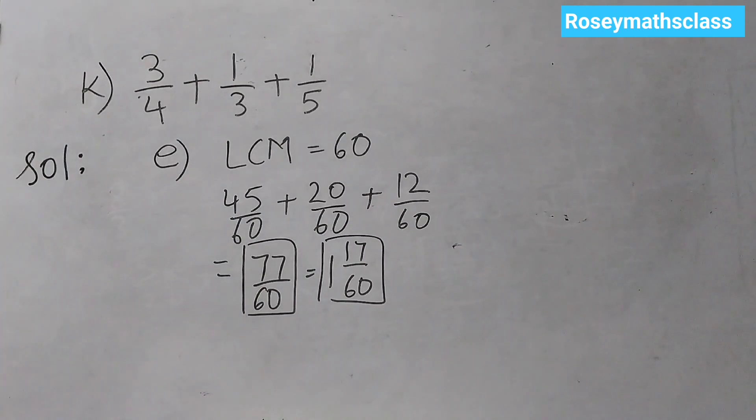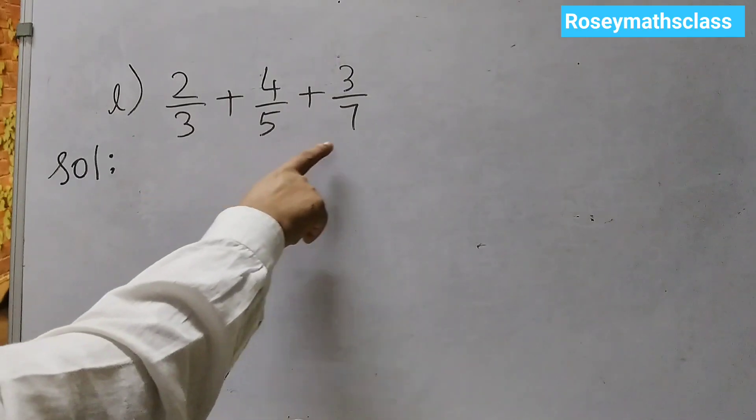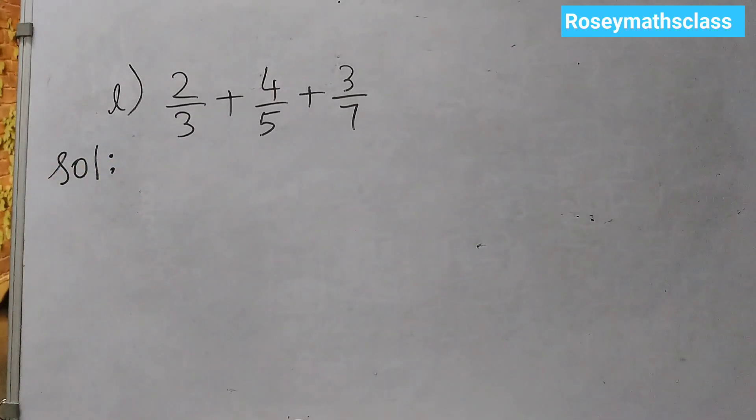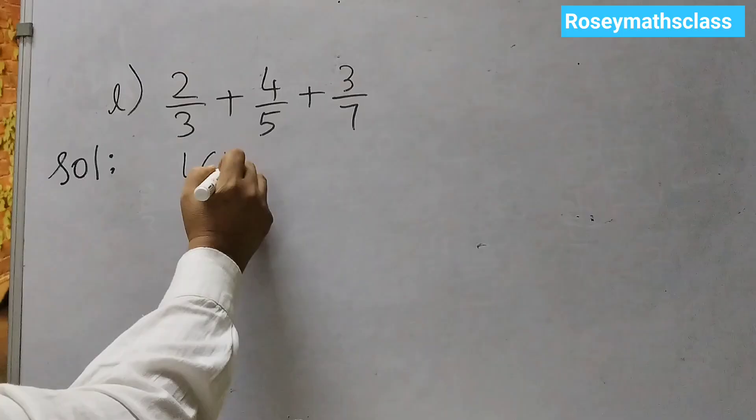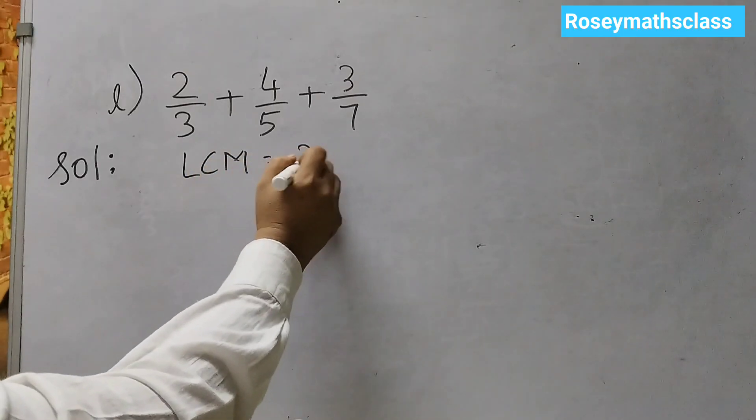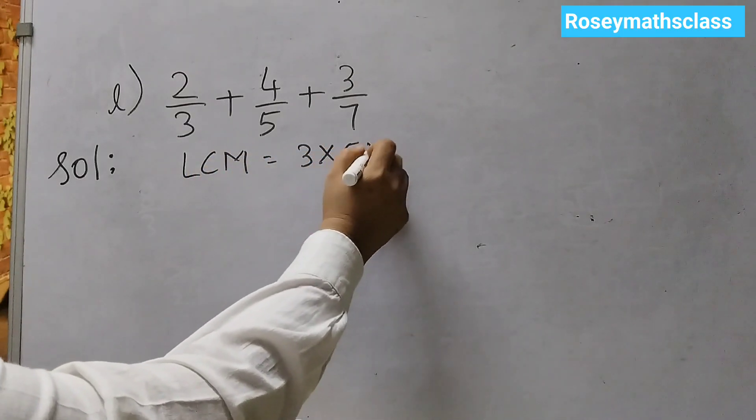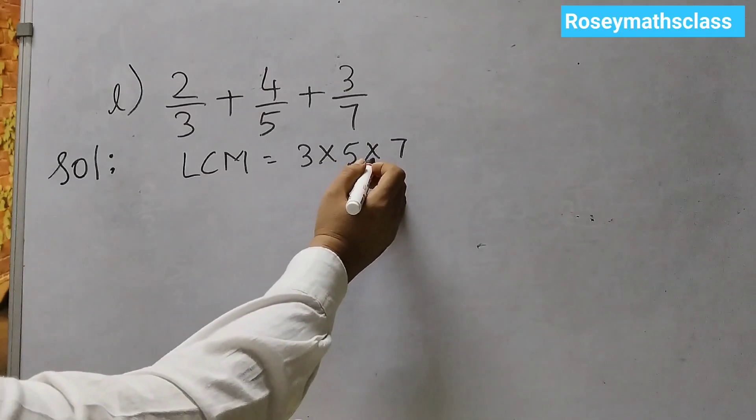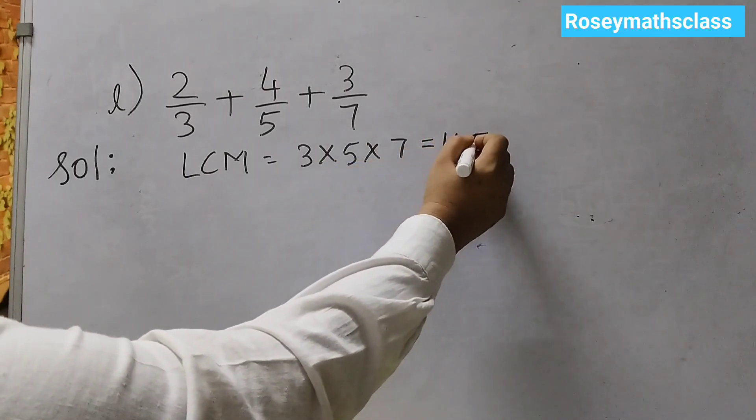Now, moving on to the next one. 2 by 3 plus 4 by 5 plus 3 by 7. So, now we have all different denominators. So, we will find the LCM. So, the lowest common multiple would be 3 into 5 into 7. So, 3 times 5 is 15 and 15 into 7 is 105.